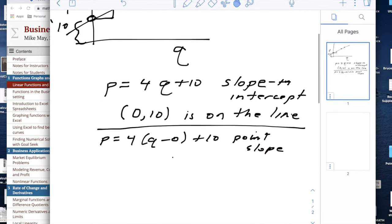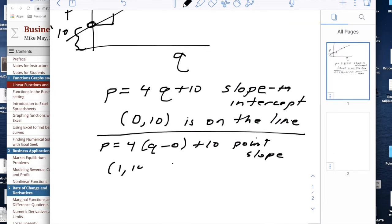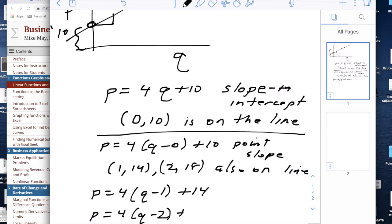But if I'm looking at my initial equation (1, 14) and (2, 18) are also on the line. So P equals 4 times (Q minus 1) plus 14 and P equals 4 times (Q minus 2) plus 18 are also point slope.